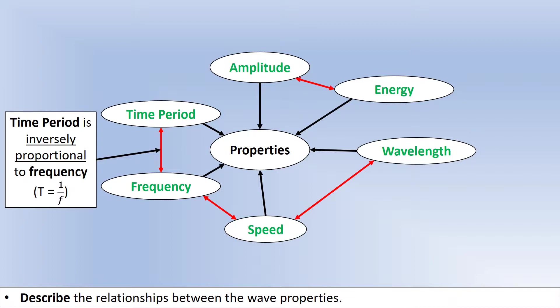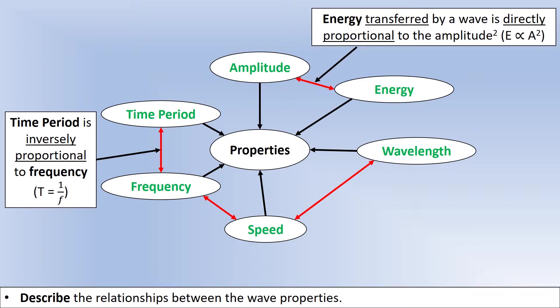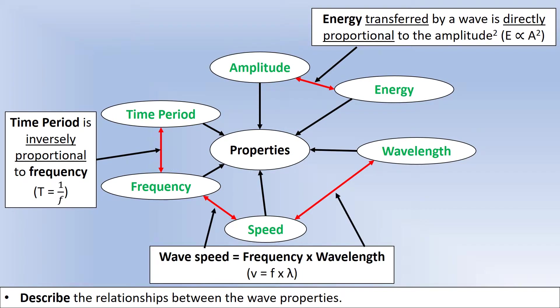If you measure time period you now know the frequency, and vice versa. The next relationship is between amplitude and energy: the energy transferred by a wave is directly proportional to the amplitude squared. So if you double the amplitude, the energy transferred is multiplied by four. The final equation links frequency, wavelength, and speed — this is the wave equation: speed equals frequency times wavelength. That relates the last three properties of a wave.